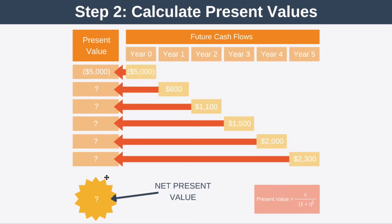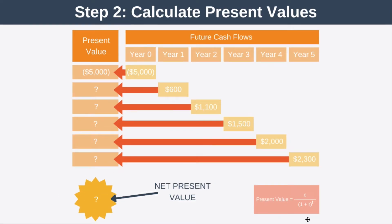And then we will add these up to get the net present value. Now, the formula for a single present value you can see here. In the formula, we take a cash flow and divide it by one plus our discount rate — so in this case, one plus 10%, which we represent as a decimal, so that becomes one plus 0.1. We then take that number, 1.1, and raise it to the power of our time period — so that could be one for year one or three for year three, for example.